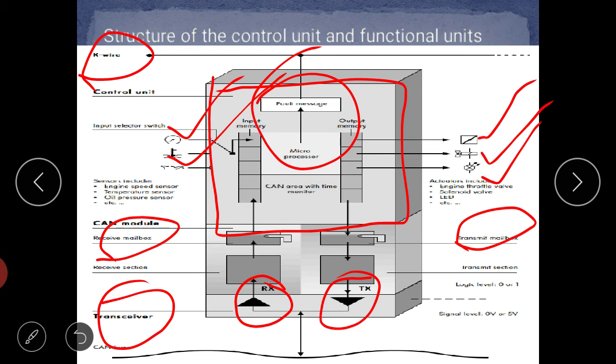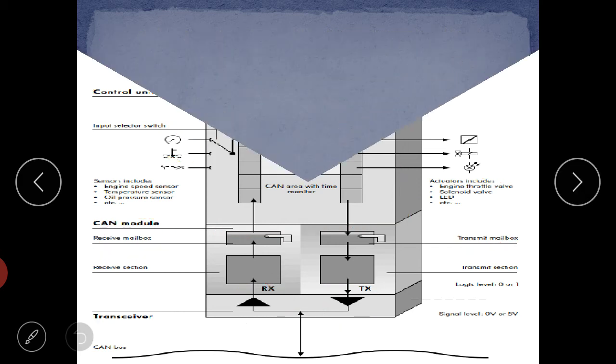From the CAN bus line, the transceiver receives the signal and converts the electrical signal into a form that the CAN controller can recognize. From the CAN controller, that data is fed to the microprocessor — the microcomputer — for processing. This is the basic structure.